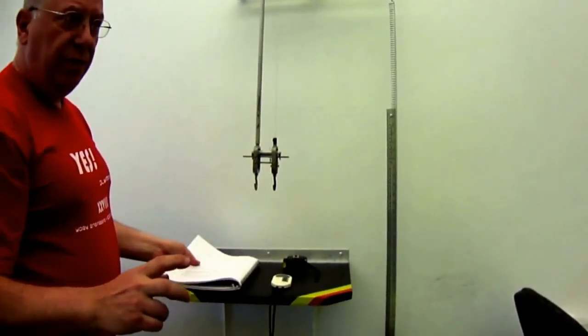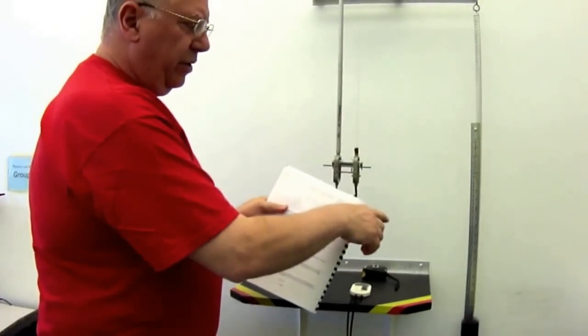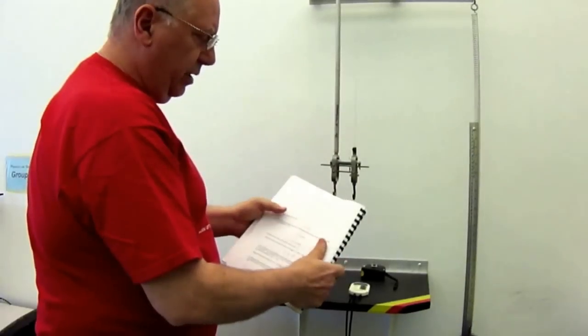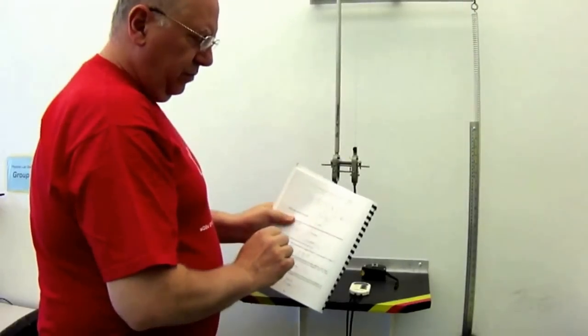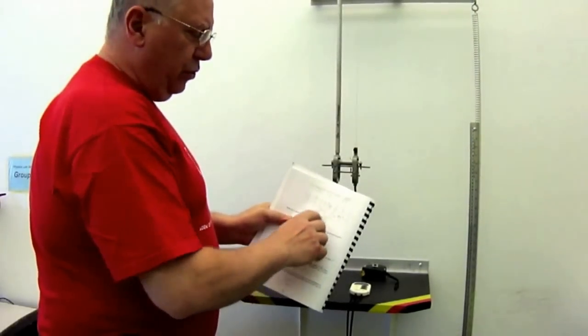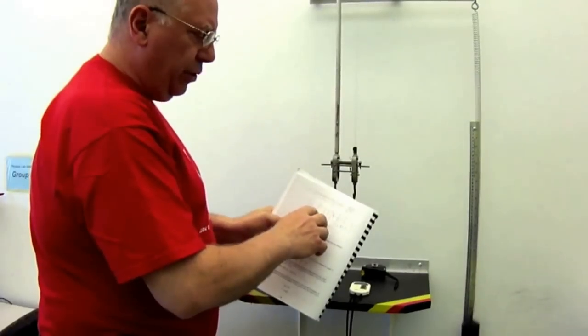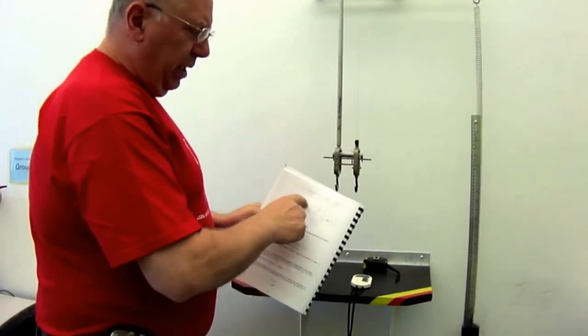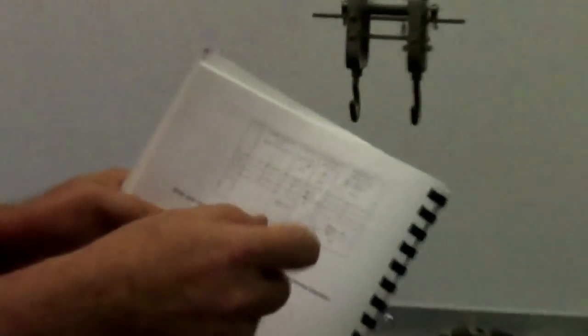The average deviation method works like this. If you have three different values for time, and those values of time are for 10 oscillations, you actually average them. Once you average them, you compare what the average time is compared to the first time, the second time, and the third time. The difference between the average time and each of your three times is known as the deviation.